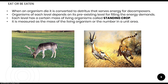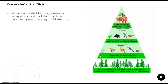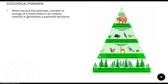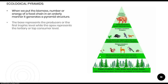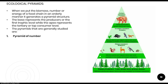Next comes ecological pyramids. A pyramid has a flat base and a pointed head. Whenever we arrange the biomass, number, or energy of a food chain in an orderly manner, it generates a pyramid structure. The base of the pyramid is made up of producers, while the top is made up of top-level consumers. In Class 12, we study three types: pyramid of number, pyramid of biomass, and pyramid of energy.